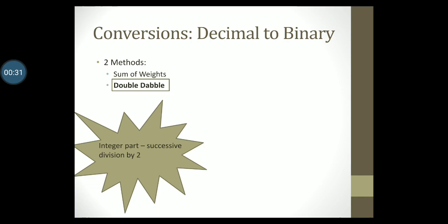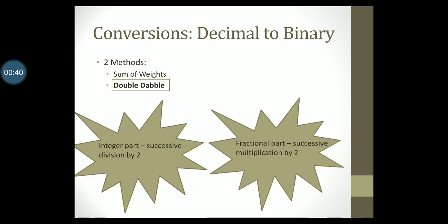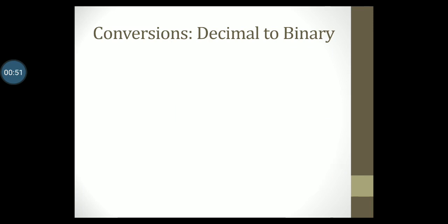This method is a very simple method. Given a decimal number, we take the integer part of the number and successively divide by 2 till the quotient is zero. Then we take the fractional part of the decimal number and multiply it by 2 till the fractional part of the product becomes zero.